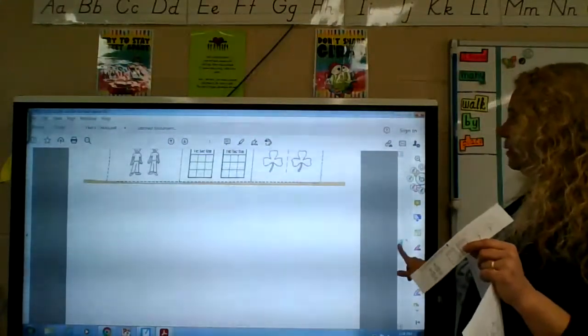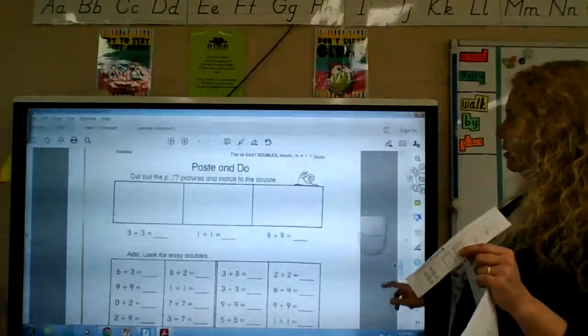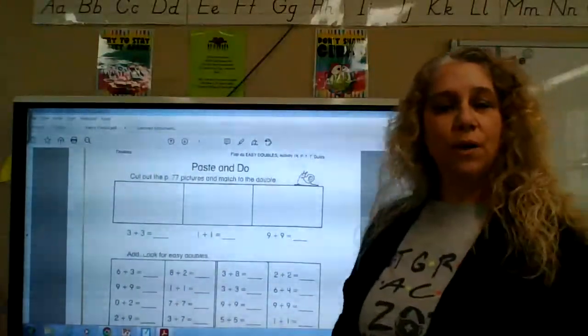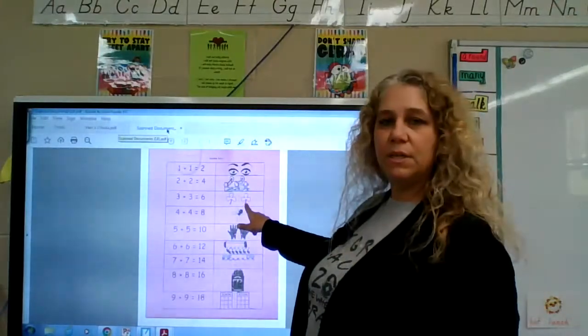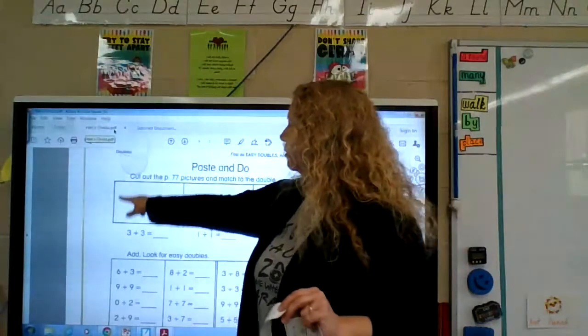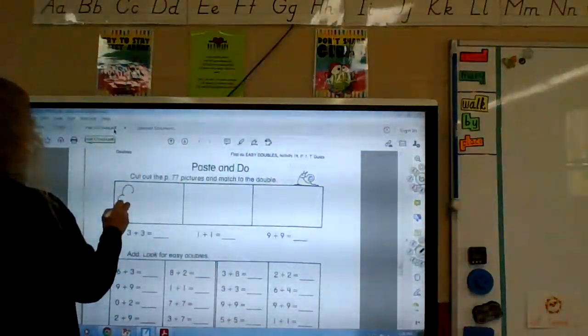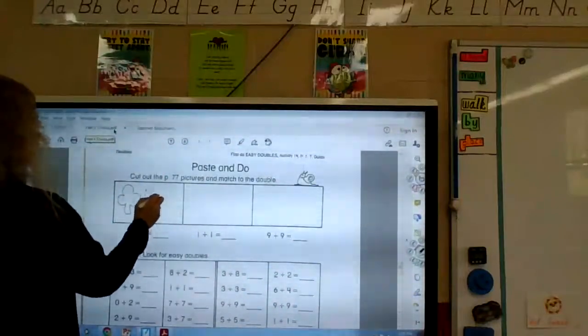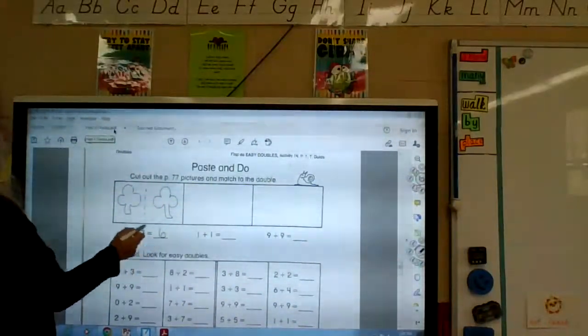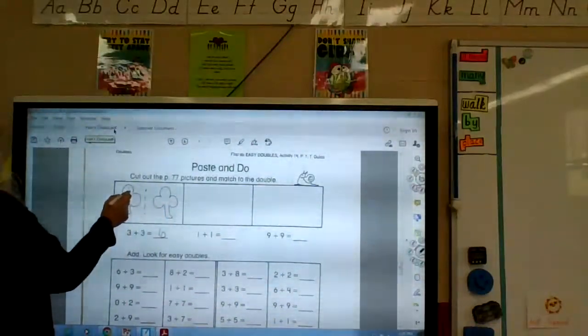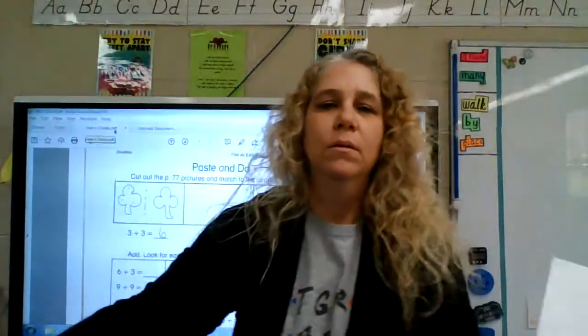All right. So, you're cutting those. And then we're going to start with this. Okay. So, for our three plus three, let's look again. Three plus three is our shamrocks. Three leaves and three leaves. So, glue three plus three, your shamrocks, right here. Glue your shamrocks. I'll just draw them. Okay. So, we say three plus three equals six. Because there's one, two, three, four, five, six leaves.